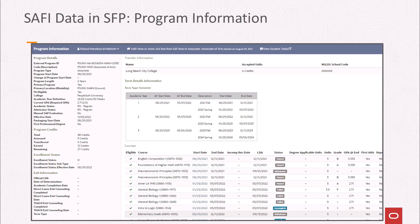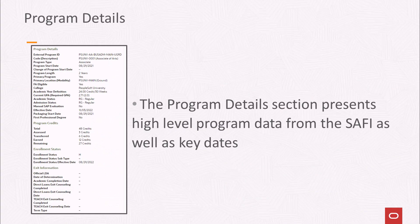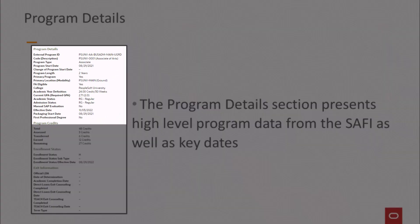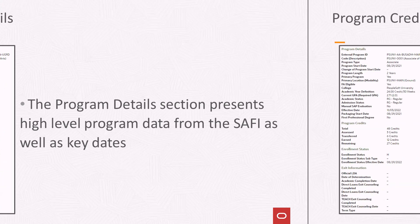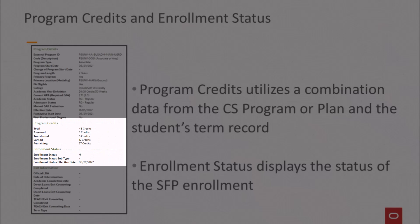Student program data can be viewed on the SFP program information page. The program details section contains two program identifiers. External Program ID concatenates key data from the student's CS program record: institution, academic program, plan, campus, and academic career. The code attribute is the SFP identifier, and student financial aid packaging and awards are driven by this. The CS SAFI handler generates this ID when creating a SAFI message. The program credits section displays the total required units from the CS program or plan SFP setup. Assessed credits will display any test credits such as CLEP posted to the student's term record. Transfer credits display CS transfer credit.